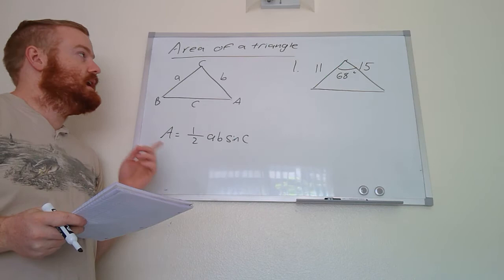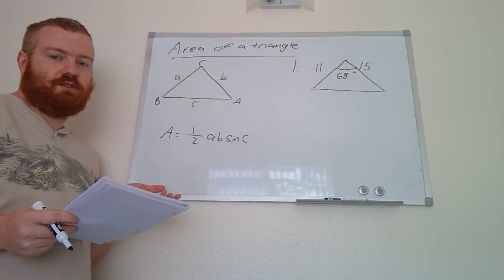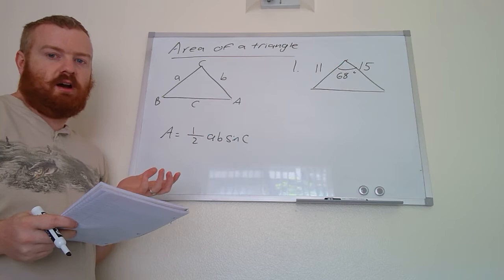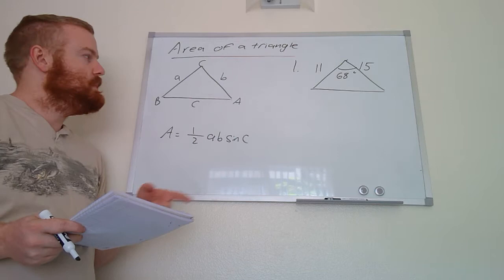This is going to be the last section we will cover for this unit — area of a triangle. In the past we've done area of a triangle using the formula one-half base times height, but the formulas we're going to use today are for when we have combinations of side lengths and angles where we don't necessarily have a base or a height.